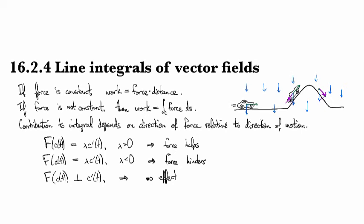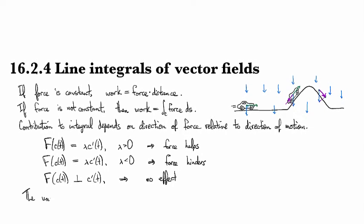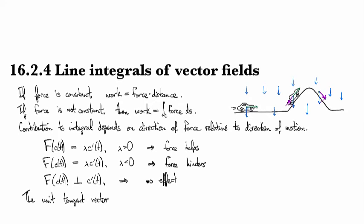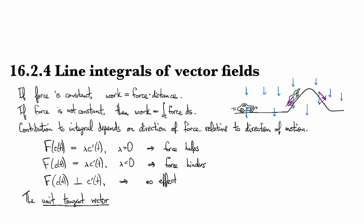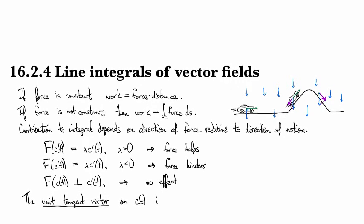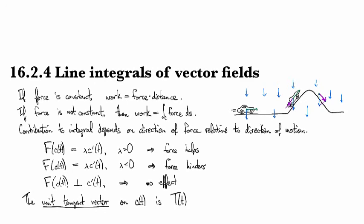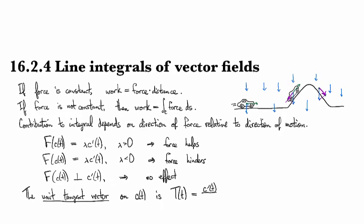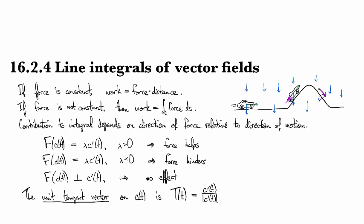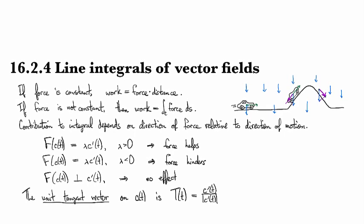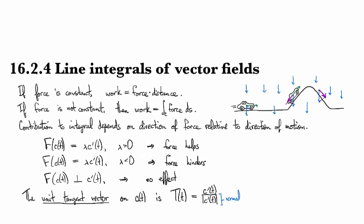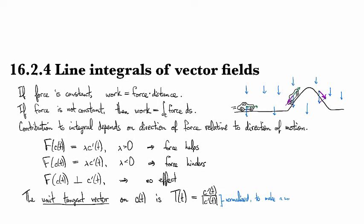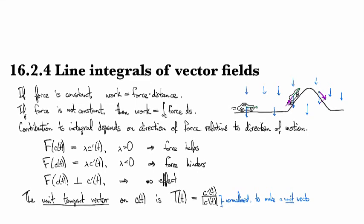So in order to do the projection, we need a tangent vector. The unit tangent vector on the curve parametrized by C of T is, so we have capital T for tangent at time T, and it's going to be defined as our velocity vector, but normalized. So that it's a unit tangent vector, to make a unit vector.